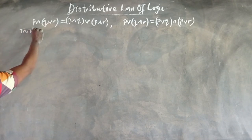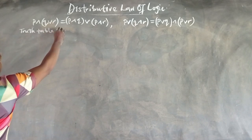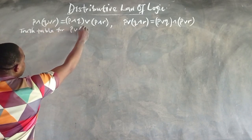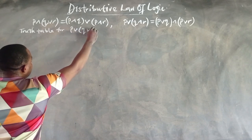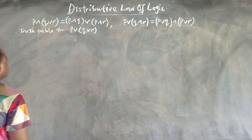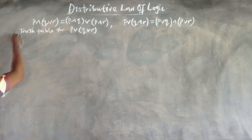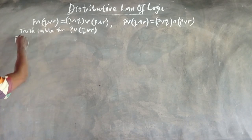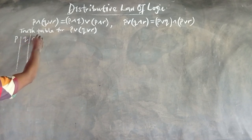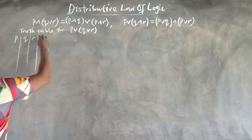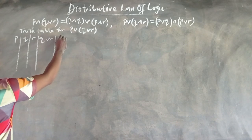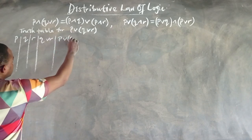We will draw the truth table for each of these compound statements, then compare to see if they really are equal. Let us begin with P∧(Q∨R). On that table, we are going to need P, Q, R, Q∨R, and finally the compound statement P∧(Q∨R).